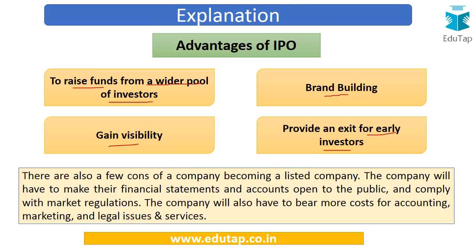An IPO also provides an exit for early investors — those who got associated with the company at a very early stage, put in their money, and got some shares. They can now sell those shares through the IPO route. The promoter-held shares can be sold to the public using this route.